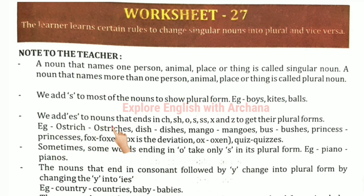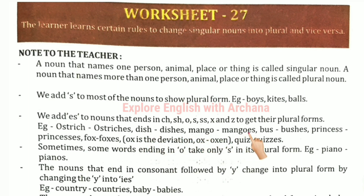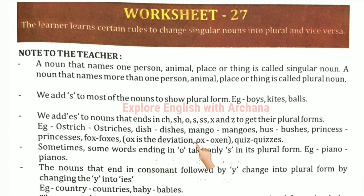We add -es to nouns that end in ch, sh, o, s, x, or z to get their plural forms. For example: ostriches, mangoes, boss → bosses, prince → princesses, fox → foxes, quiz → quizzes.